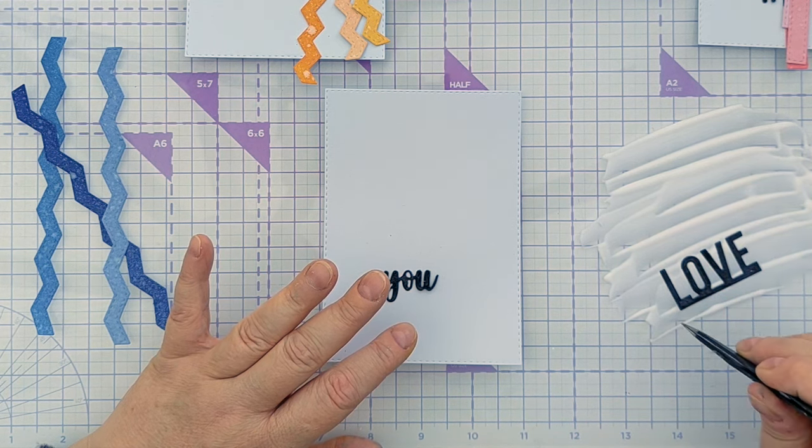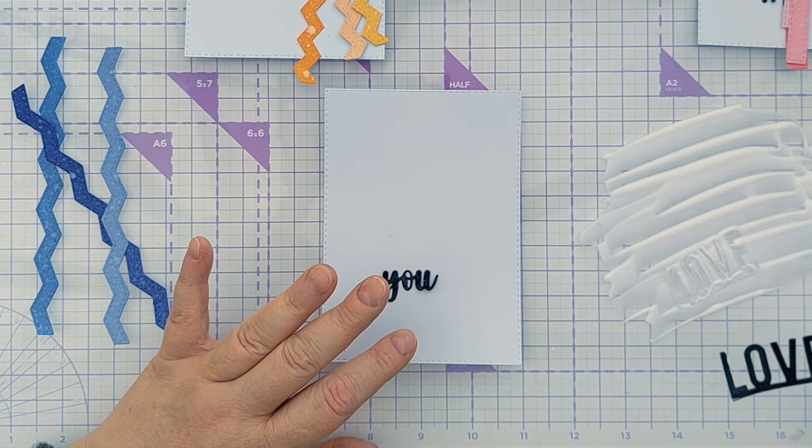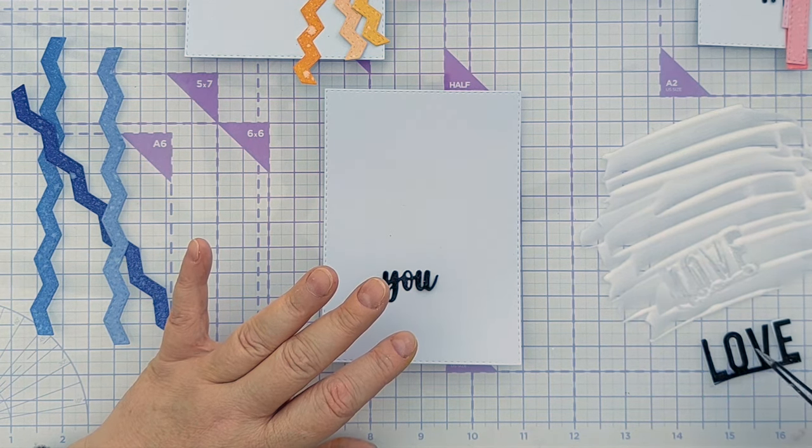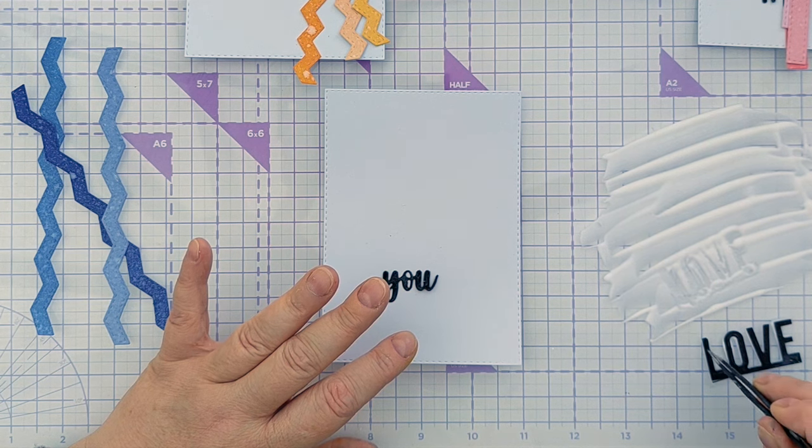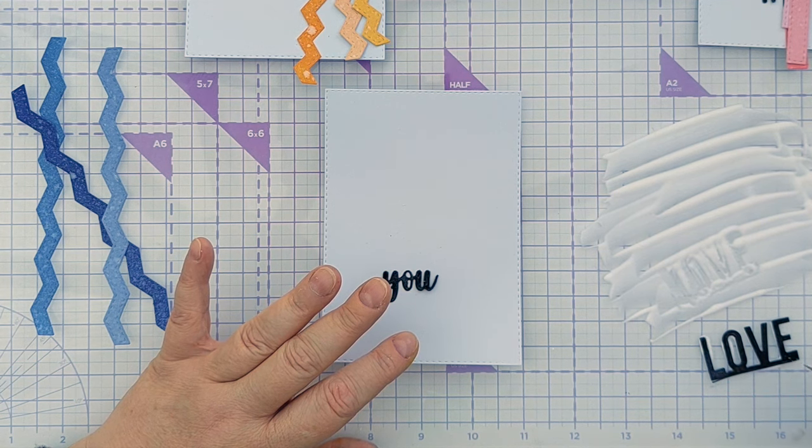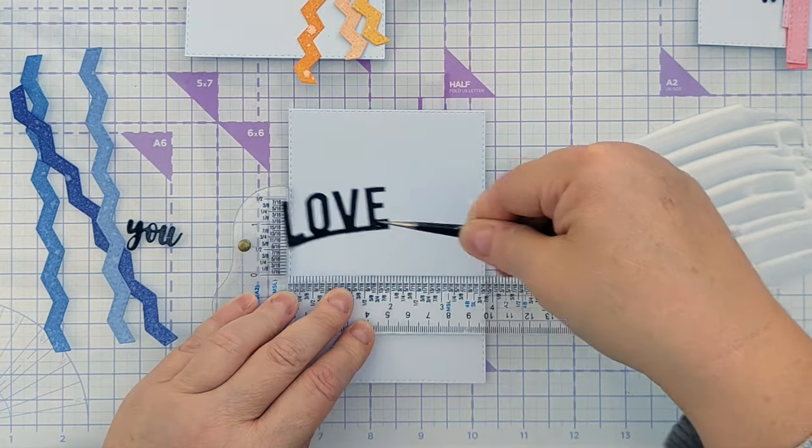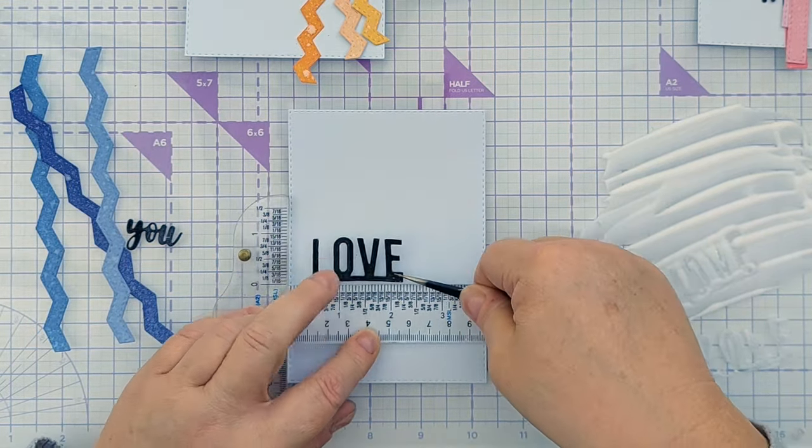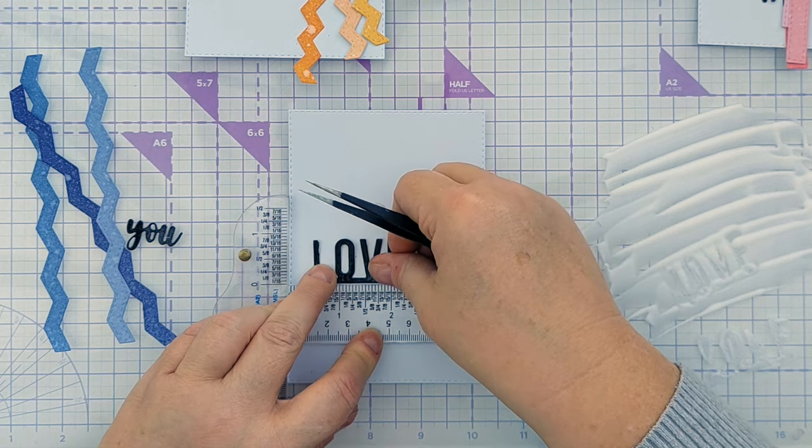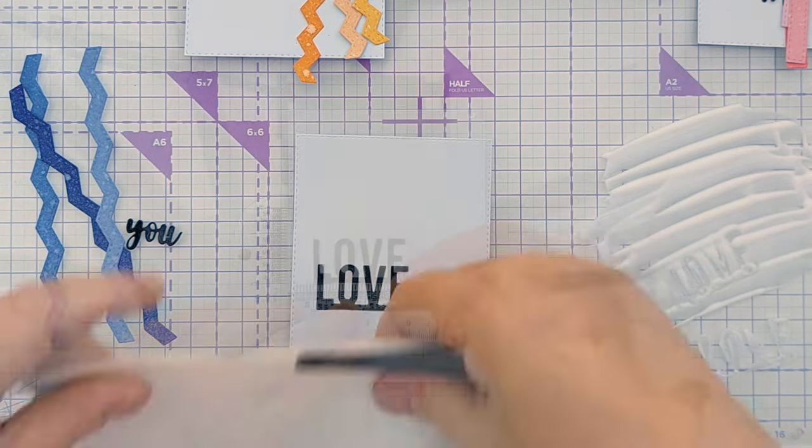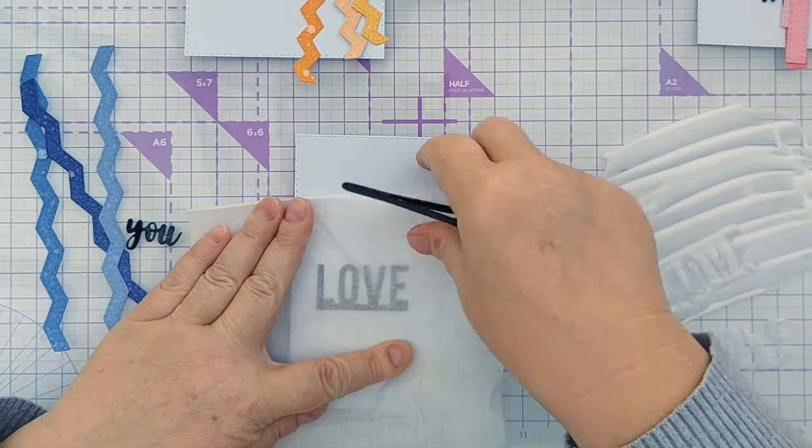So I'm carefully dipping my sentiment in there. I'm going to pop it on here to remove any excess so any splurging out the side happens on the mat, not on my card. I'm using my two square ruler to put that about there, getting it nice and straight. I've got some non-stick paper here I can press that down with.